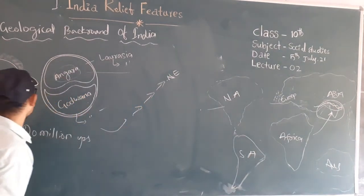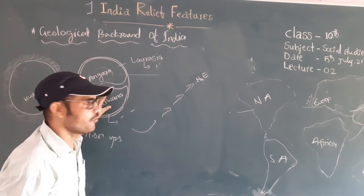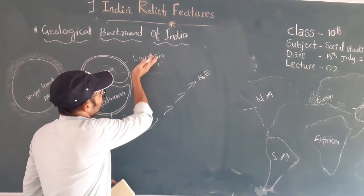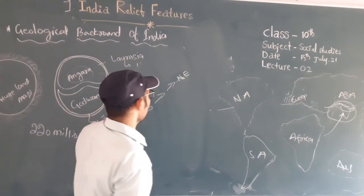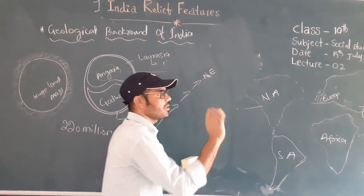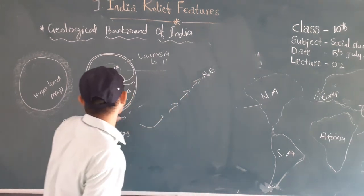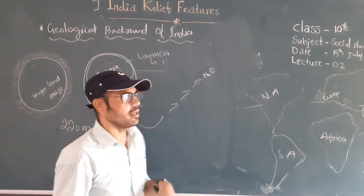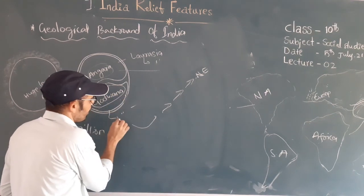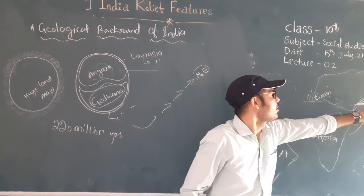So, to recap: originally there was only one landmass — Pangaea. It split into Angara and Gondwana. Gondwana is the oldest landmass, and from it came South America, Africa, Australia, and India. In the exam, an important question might be asked: the Indian peninsula consists of which landmass? The answer is Gondwana. The Indian land moved towards the north and collided with Eurasia, and that is how the Himalayas were created.